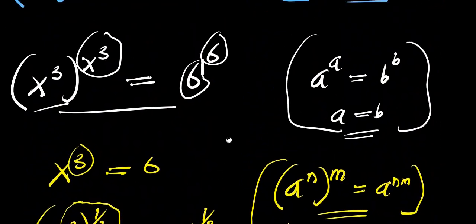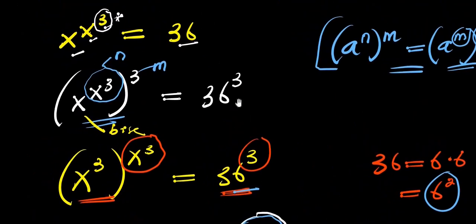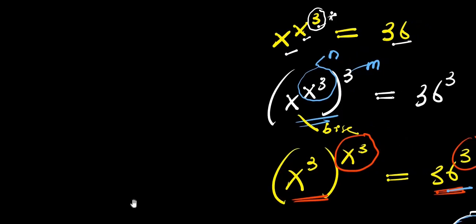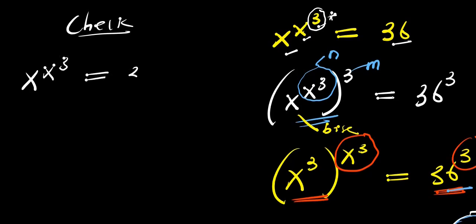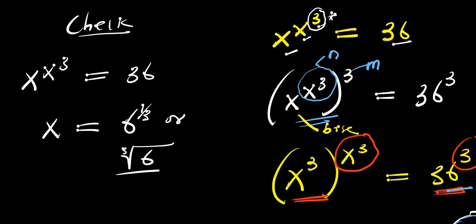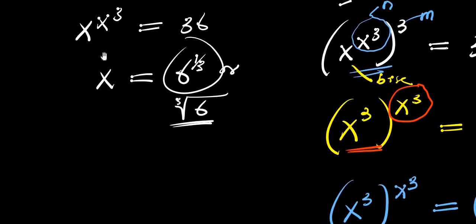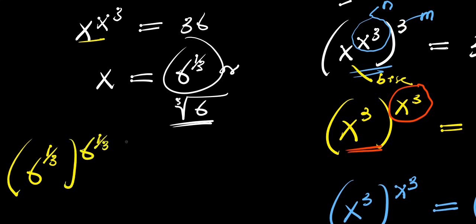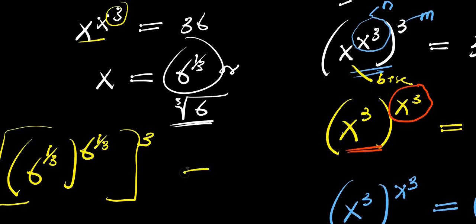The next step will be for us to insert this answer back into the original problem and see if it satisfies this equation — we do a check. We have x power x power 3 equals 36, and our x is 6 power 1 over 3, or the cube root of 6. That means instead of writing x, we have 6 power 1 over 3, raised to the power of another x — that is 6 power 1 over 3 — raised to the power of 3, and this equals 36.